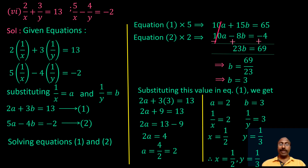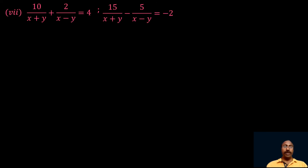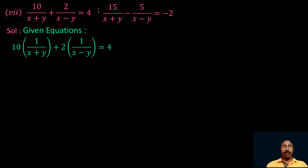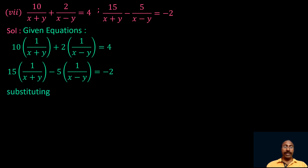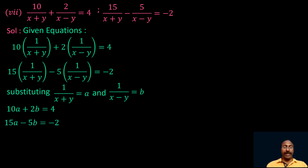Now for problem 7: 10 by (x plus y) plus 2 by (x minus y) equal to 4, and 15 by (x plus y) minus 5 by (x minus y) equal to minus 2. This is similar to problem 5. Substituting 1 by (x plus y) equal to a and 1 by (x minus y) equal to b, the equations become 10a plus 2b equal to 4 and 15a minus 5b equal to minus 2.